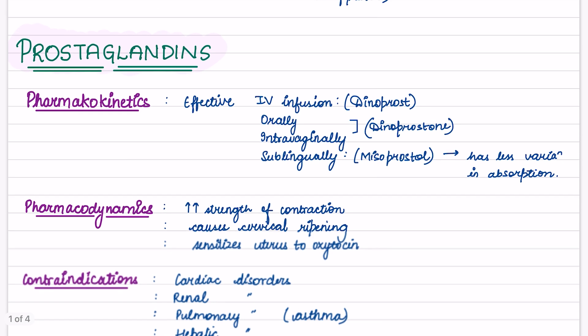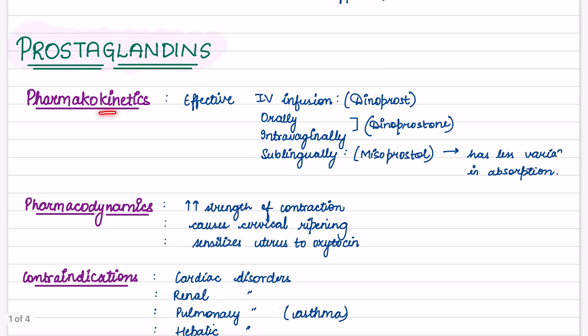Firstly, starting with prostaglandins. What is the pharmacokinetics for prostaglandins? IV is given dinoprost, dinoprostol is given orally as well as intravaginally, and mesoprostol is given sublingually.